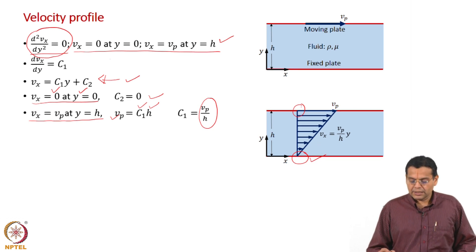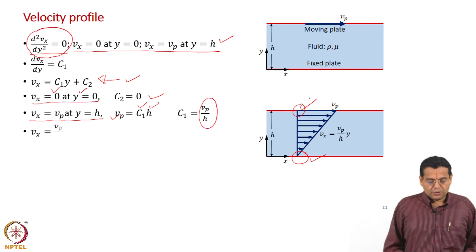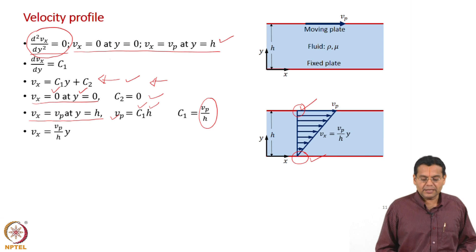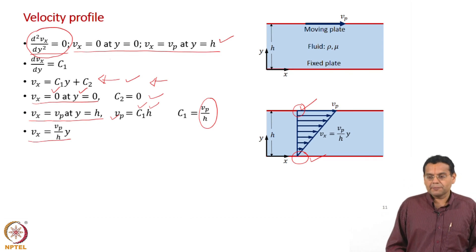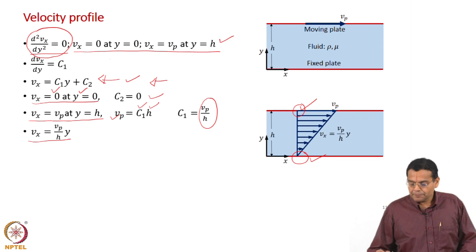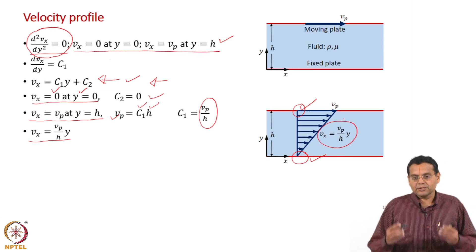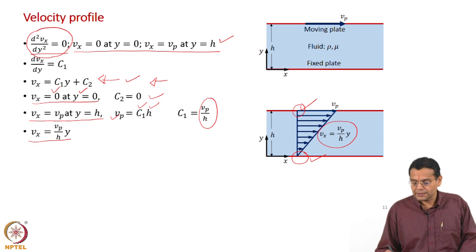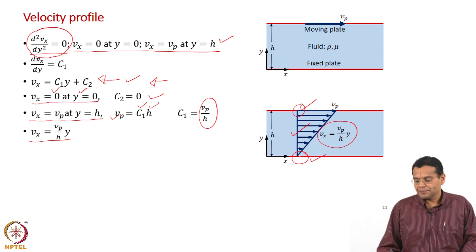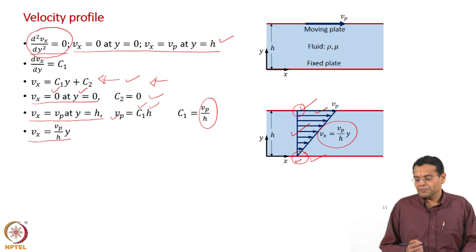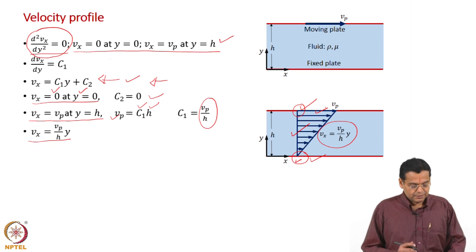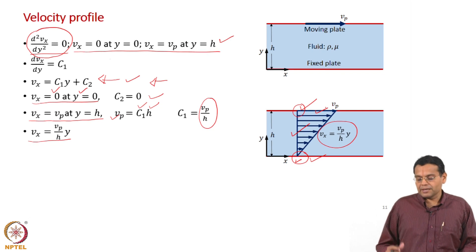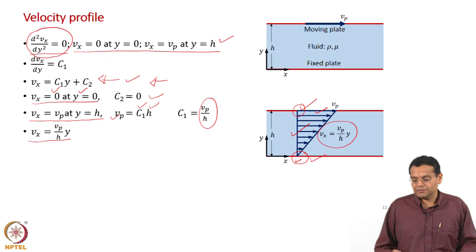At the bottom, the velocity is 0; at the top, the velocity is vp. Substituting back into the equation, we get the velocity profile: vx is equal to (vp/h) times y. That is the velocity profile which we have been seeing almost from the beginning of the course. We said we would derive it towards the end of the fluid mechanics part, and that is what we have done now. The pictorial representation shows velocity varying linearly from 0 to vp, with velocity vectors directed along the x direction. So in that way it is a milestone — we have been looking at this many times, and today's class we have derived it.